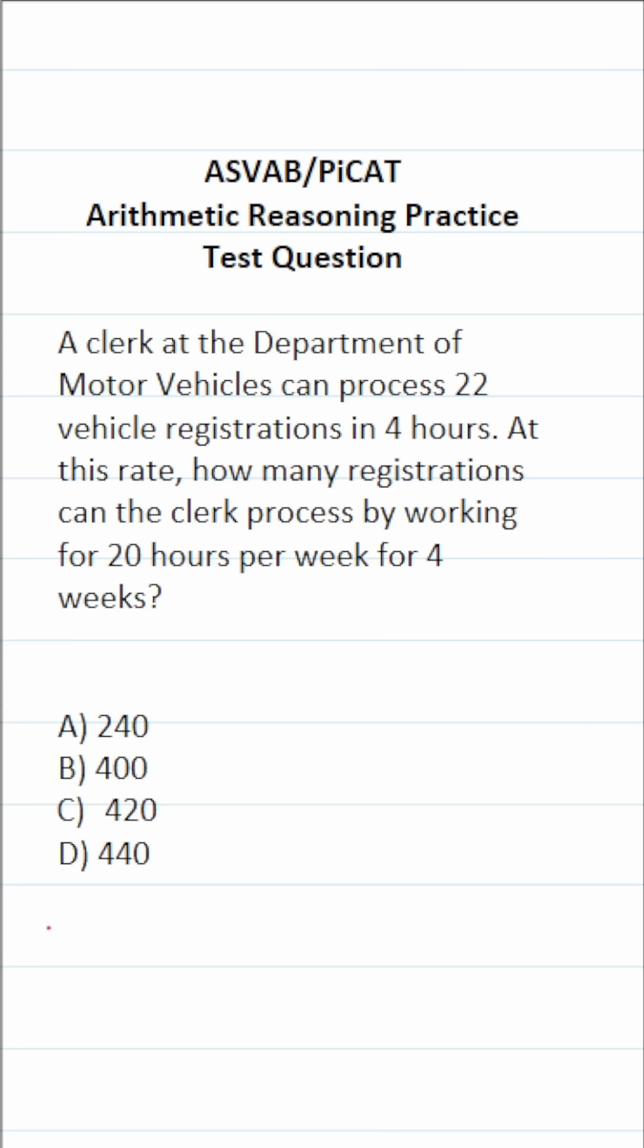So we're actually going to use a proportion to solve this one. Again, we know the clerk can process 22 vehicle registrations in four hours. That's going to be equal to the number of vehicle registrations they can process, which is unknown. So we'll call it x over the course of four weeks if they work for 20 hours per week.